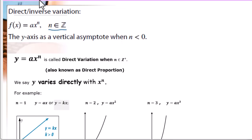This video is about direct and inverse variation. The function f(x) equals a times x to the nth power, where n is an integer. When n is negative, the y-axis acts as the vertical asymptote line for inverse variation.